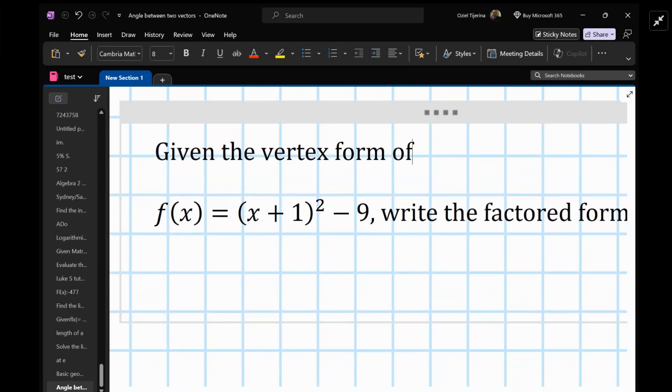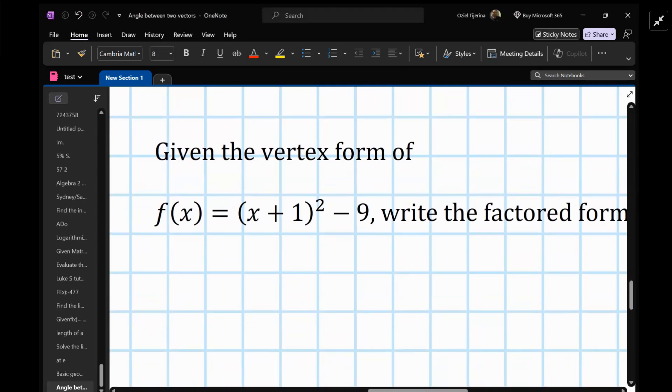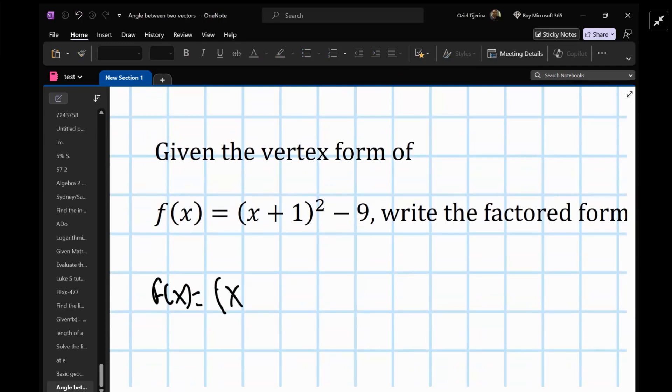Now let's go ahead and write down the formula. So f(x) equals (x + 1)² - 9. The first step you want to do is expand (x + 1)².